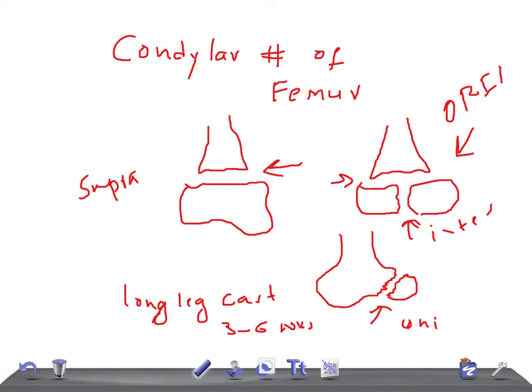For supracondylar fractures, the best way to treat a displaced supracondylar fracture is by internal fixation. This can be done by either closed or open reduction. Nails and plates can also be used for this.